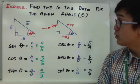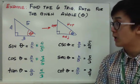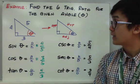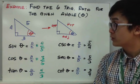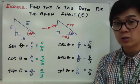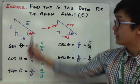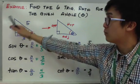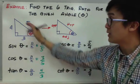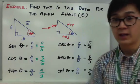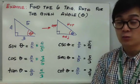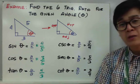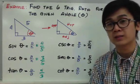So, yan yung isa sa mga applications ng SOHCAHTOA, kung saan kailangan mong hanapin yung 6 trig ratios given na yung mga sides ng triangle ay given lahat — walang missing side. So, paano naman kung merong missing side?